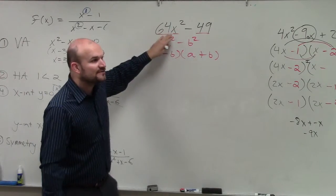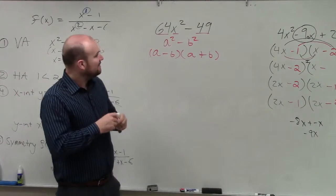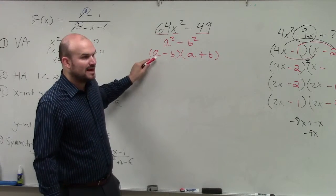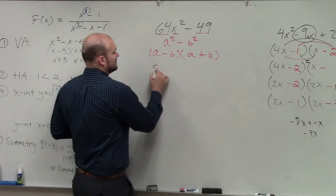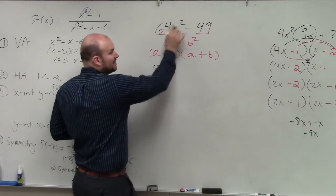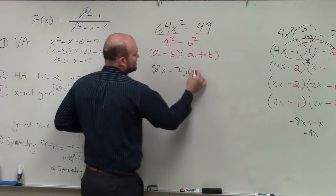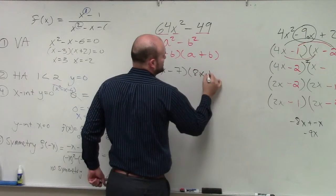If you recognize it's a difference of two squares, if 64 is a squared term, what is just going to be my a? 8. And then x squared, the squared term would just be x. 8x minus 7 times 8x plus 7.